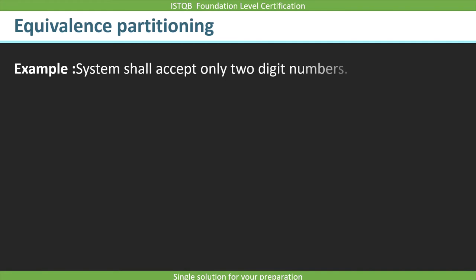Suppose you have a requirement: the system shall accept only two-digit numbers. That means the system will accept values from 10 to 99. But is it enough to test just those values? The answer is no. Here we have to apply the equivalence partitioning technique.